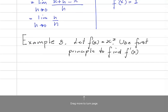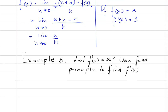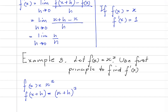Let's have a look at Example 3. In Example 3, we're to let f of x be equal to x squared, and we're to use first principle to find f prime of x. So using first principle is another way of saying use the definition. So f of x is equal to x squared, and f of x plus h is equal to x plus h, squared. So f of x plus h is saying that in f, wherever you see x, take out x and put x plus h.